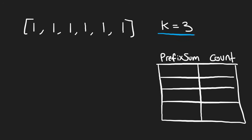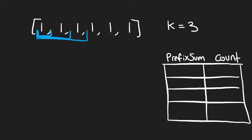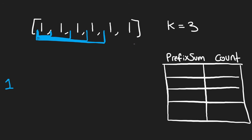Let me run through why that works. Starting the brute force approach: we begin at the first value, sum is one. First two values, sum is two. Third value, sum is three — we found one subarray. Fourth element, sum is four. Fifth, sum is five. Sixth, sum is six. But notice the repeated work we're doing.